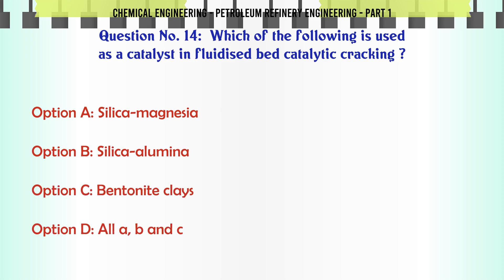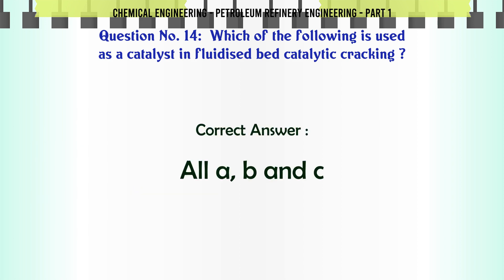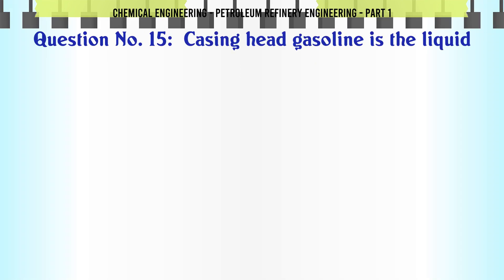Which of the following is used as a catalyst in fluidized bed catalytic cracking? A. Silica magnesia, B. Silica alumina, C. Bentonite clays, D. All A, B and C. The correct answer is All A, B and C.